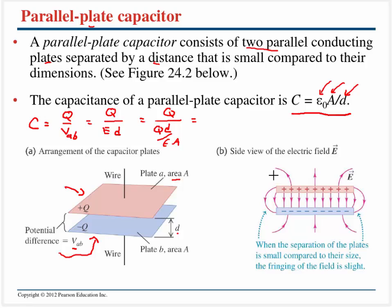The electric field between the two plates is more or less constant and uniform, going away from the positive side and towards the negative side. So if we know the capacitance, we can calculate the electric field knowing the area and the distance of separation.